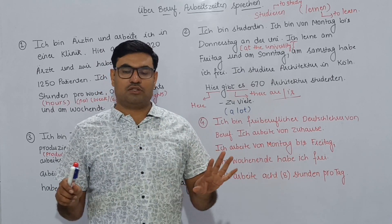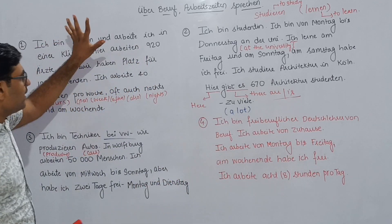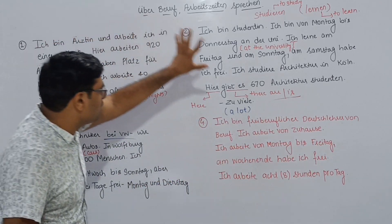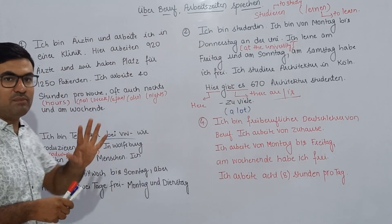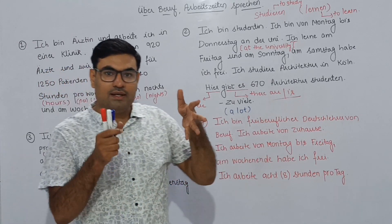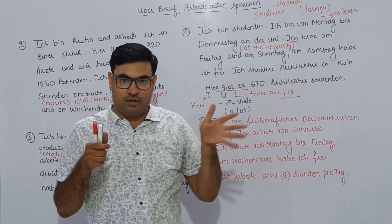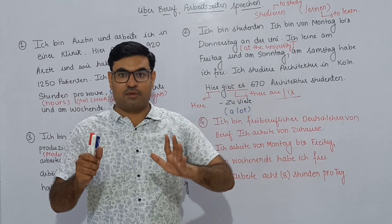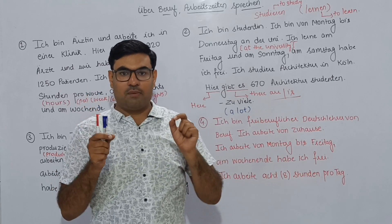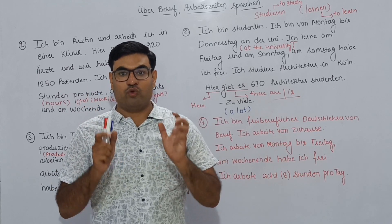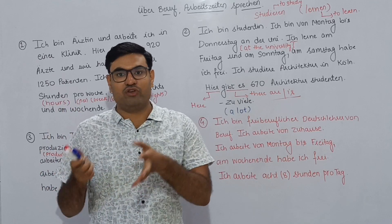Let us read it together: 'Ich bin Techniker bei Fau-Vee. Wir produzieren hier Autos in Wolfsburg. Hier arbeiten 50,000 Menschen. Ich arbeite von Mittwoch bis Sonntag. Aber habe ich zwei Tage frei — Montag und Dienstag.'